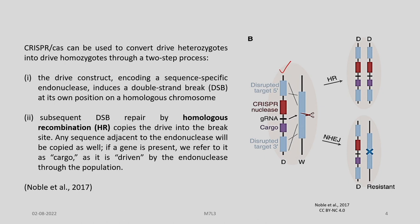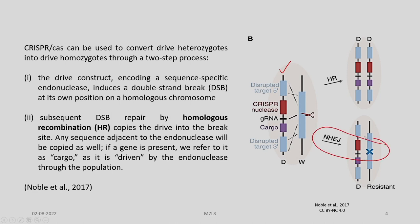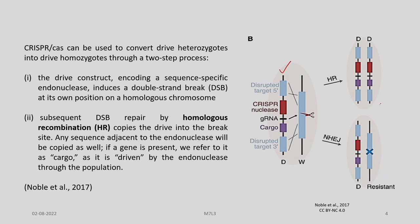Here you can see the homologous recombination due to which the copy becomes available in both chromosomes. But in NHEJ, that doesn't happen. So this population will remain in its wild-type state, in a heterozygous state. But in the homologous recombination case, homozygosity is attained.